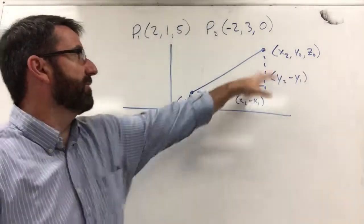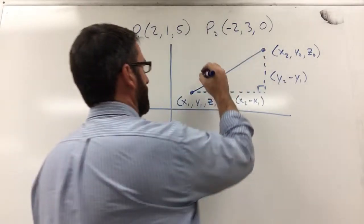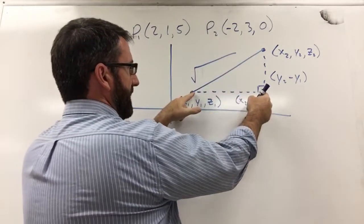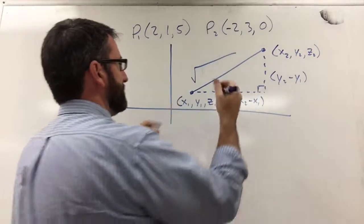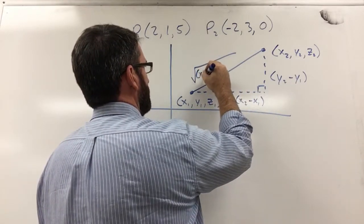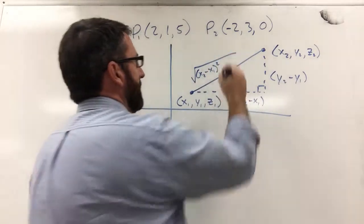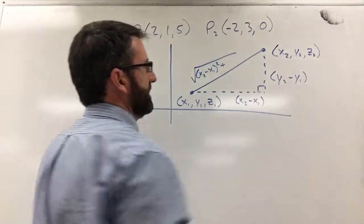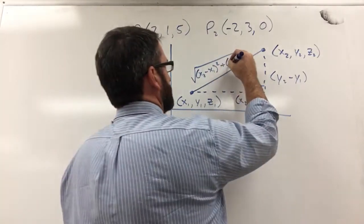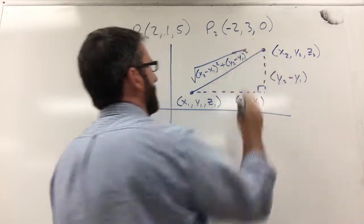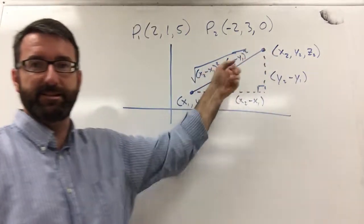And we know from the Pythagorean theorem that this distance here is going to be the square root of this side squared. So (x₂ minus x₁) squared, plus this side squared. So (y₂ minus y₁) squared. So that's going to give us this distance.